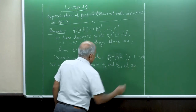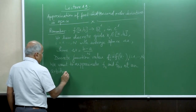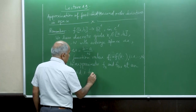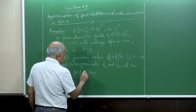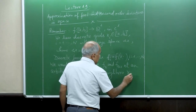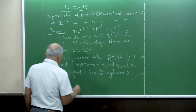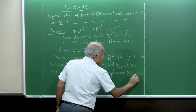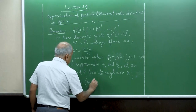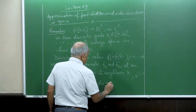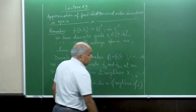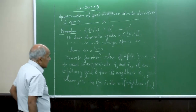We want to approximate f_x at an arbitrary grid point x_i, using its neighbors x_{i_j}, where j equals 1 to M — M being the number of neighbors of i. This is the same setup as in the first-order approximation.